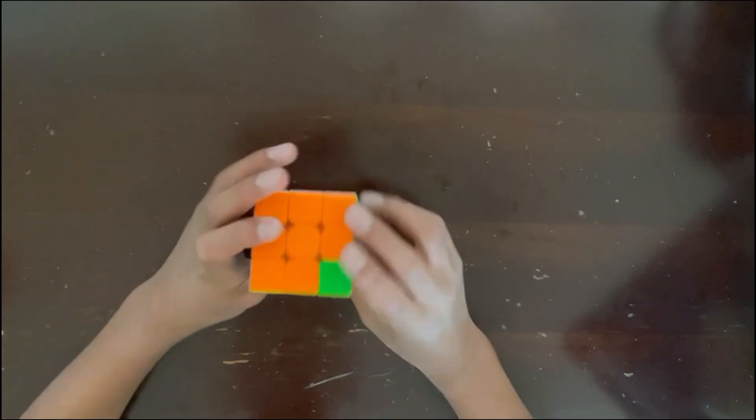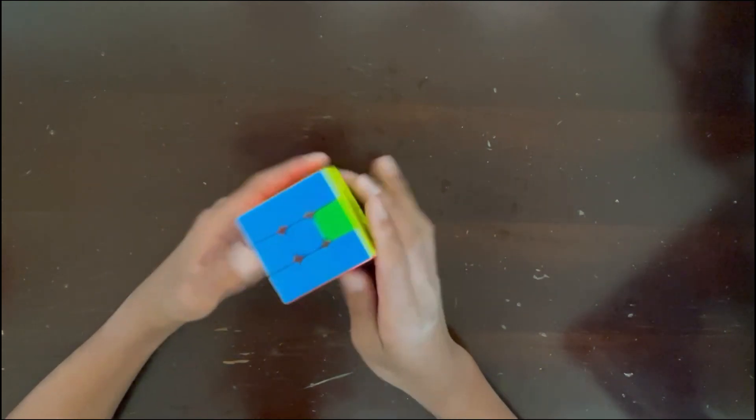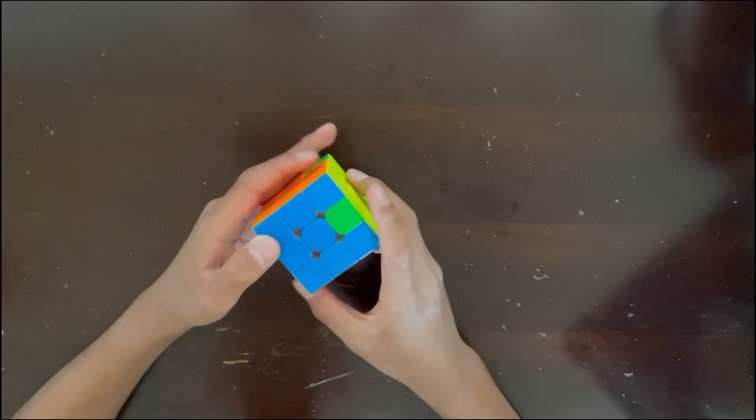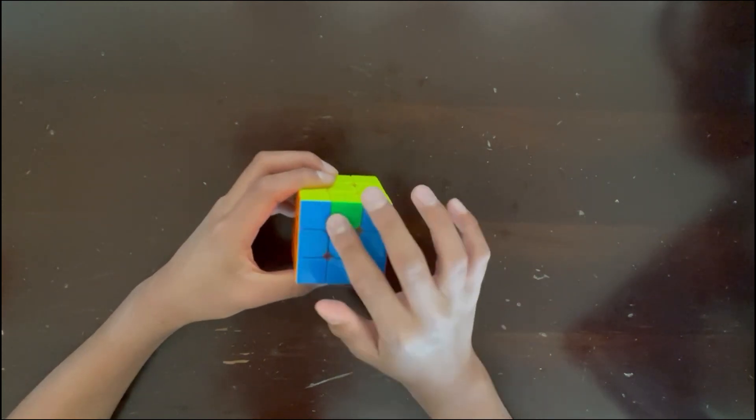So if you can see here, we have the LFA solved, and then we have some headlights right here. These are the blue headlights, and if you don't know what headlights are, they're basically just the two matching corners that are the same color, and the edge in the middle is a different color.